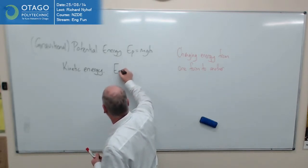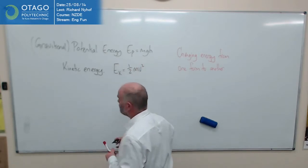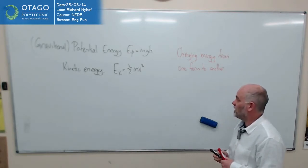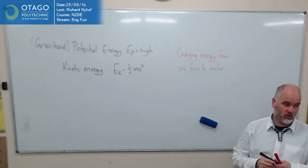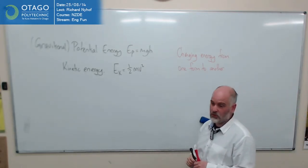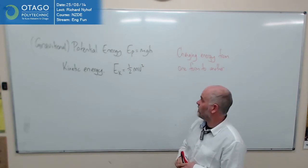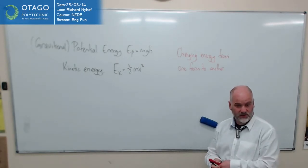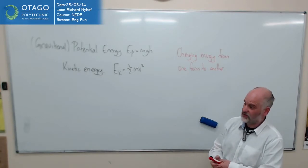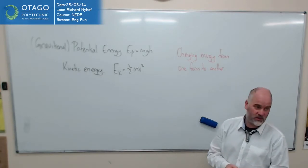Again, it's going to be in joules. And that formula is on your formula sheet as well. So you can figure out, if you know how much energy something's got, you can figure out how fast it's going. Or if you know how fast it's going, you can figure out how much energy it's got.